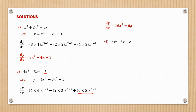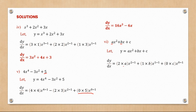Now for ax squared plus bx plus c, the coefficients a, b, and c are constants. We treat them just like numerical constants. For ax squared we get 2 times a into x, which is 2ax. For bx, the index reduces to zero giving b times one equals b. The constant c differentiates to zero. So dy/dx equals 2ax plus b.